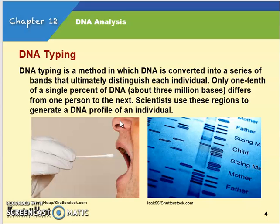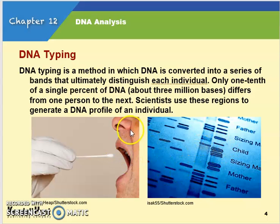Now let's take it over to the forensic side of things. DNA typing is a method in which DNA is converted into a series of bands, and those bands can be used to identify an individual. Only one tenth of a percent of DNA — about three million bases — differs from one person to the next, and scientists look at those regions to help generate a DNA profile.